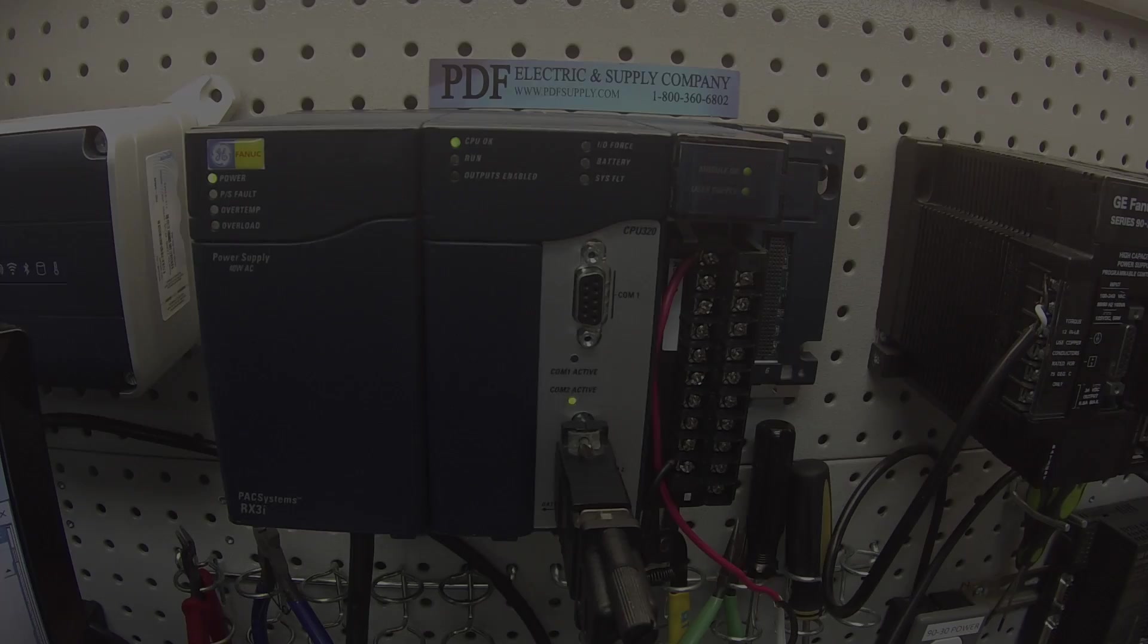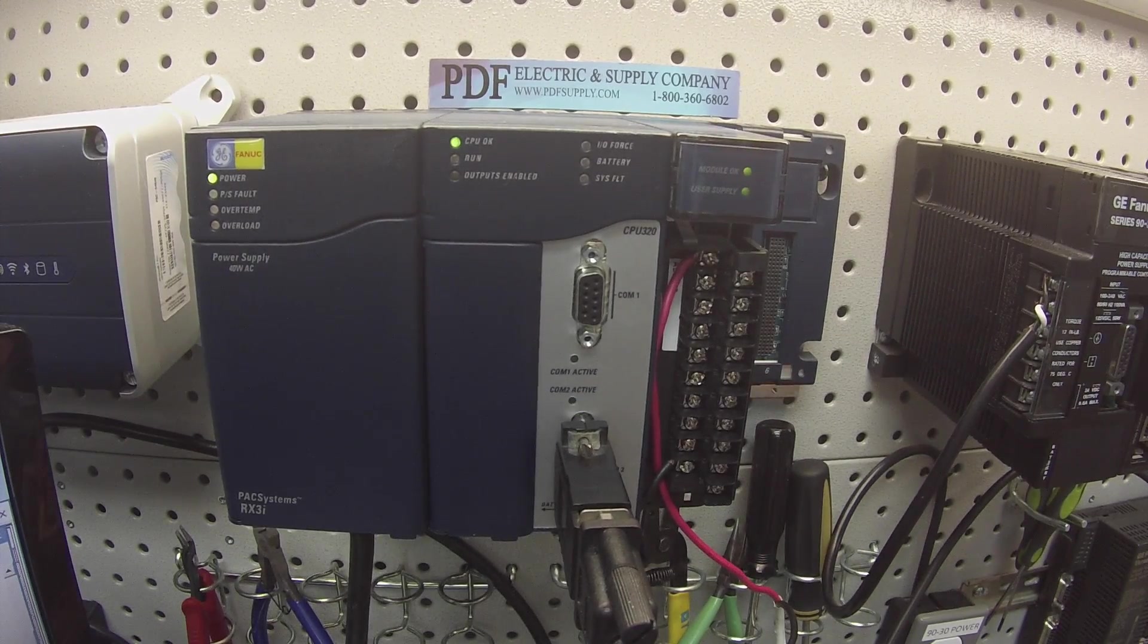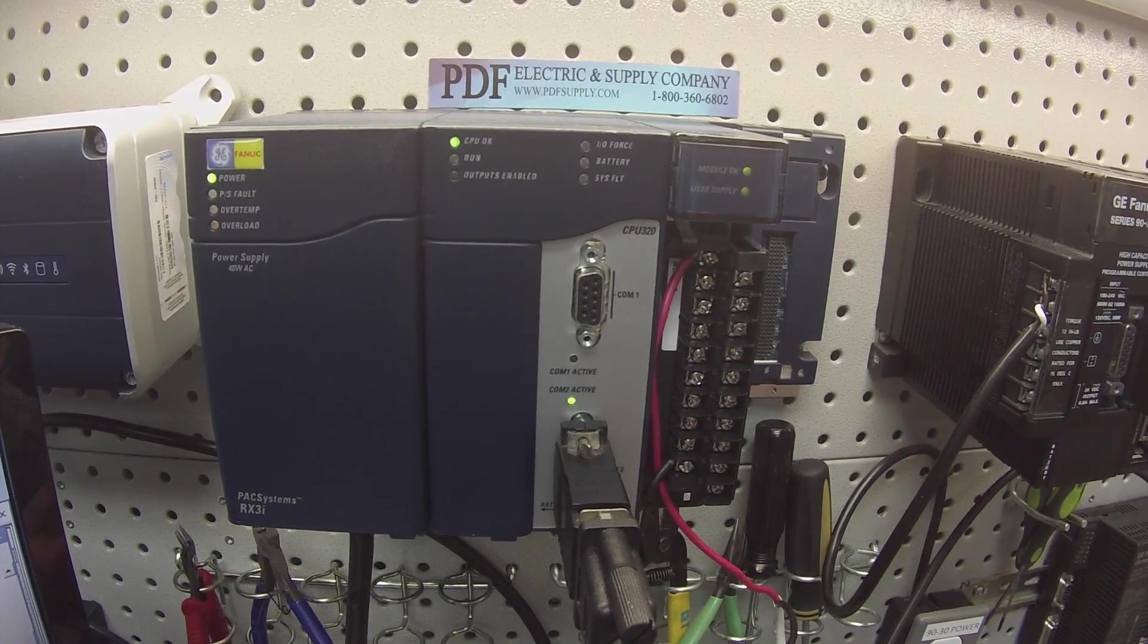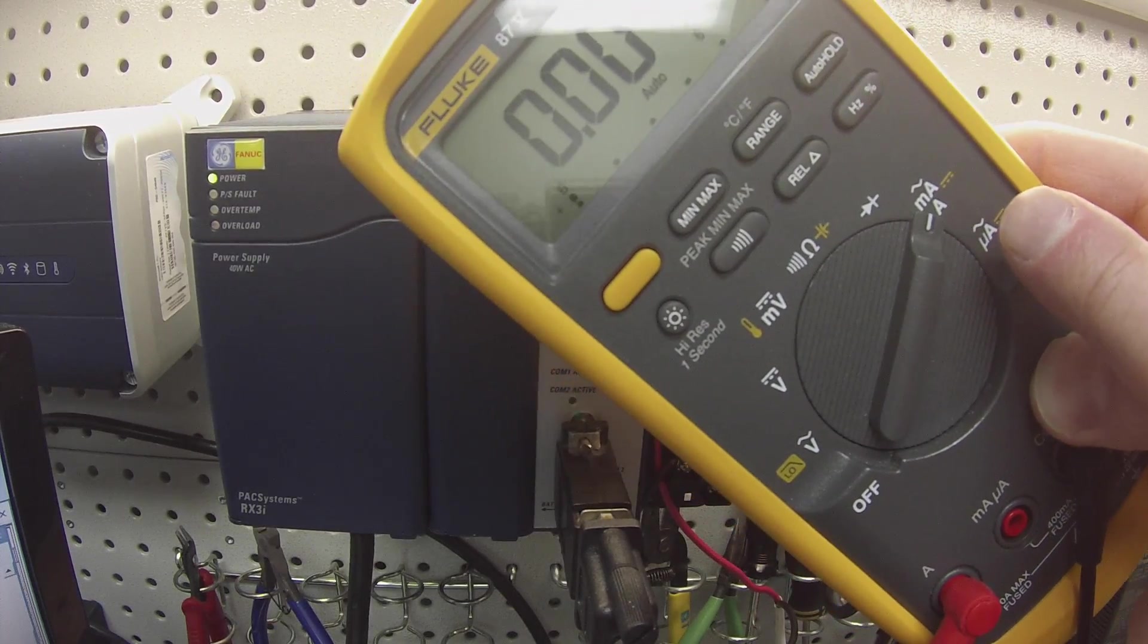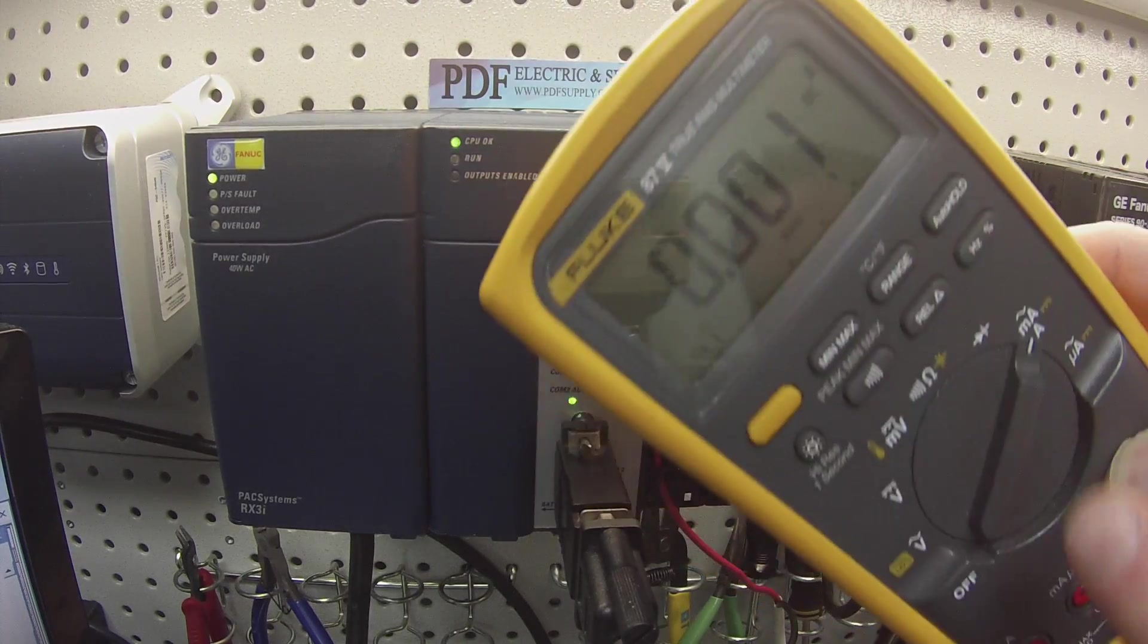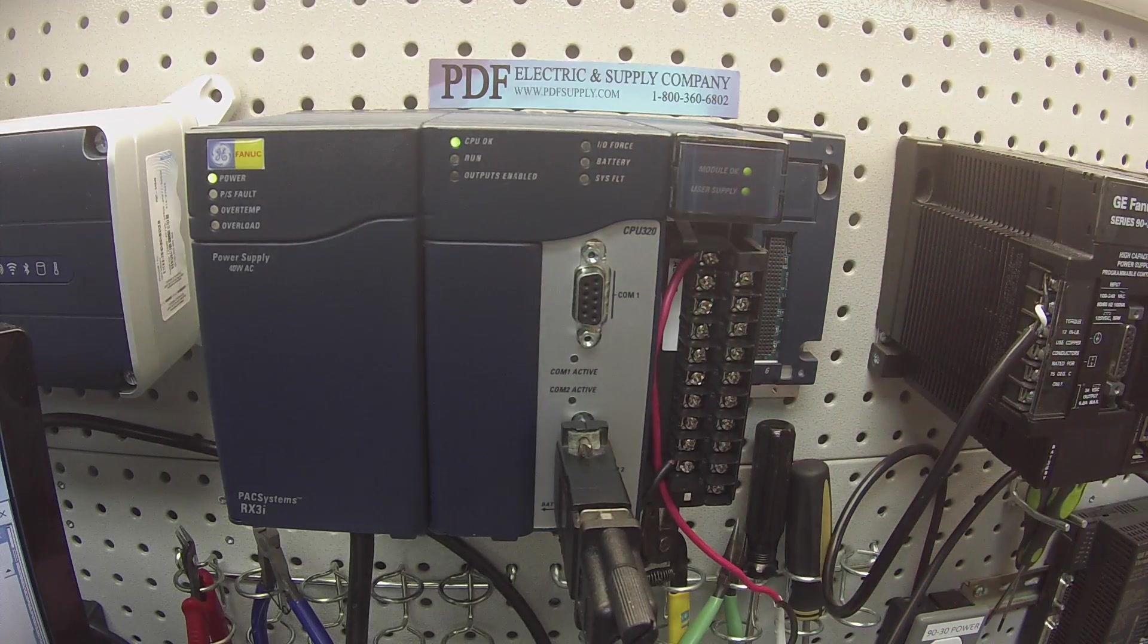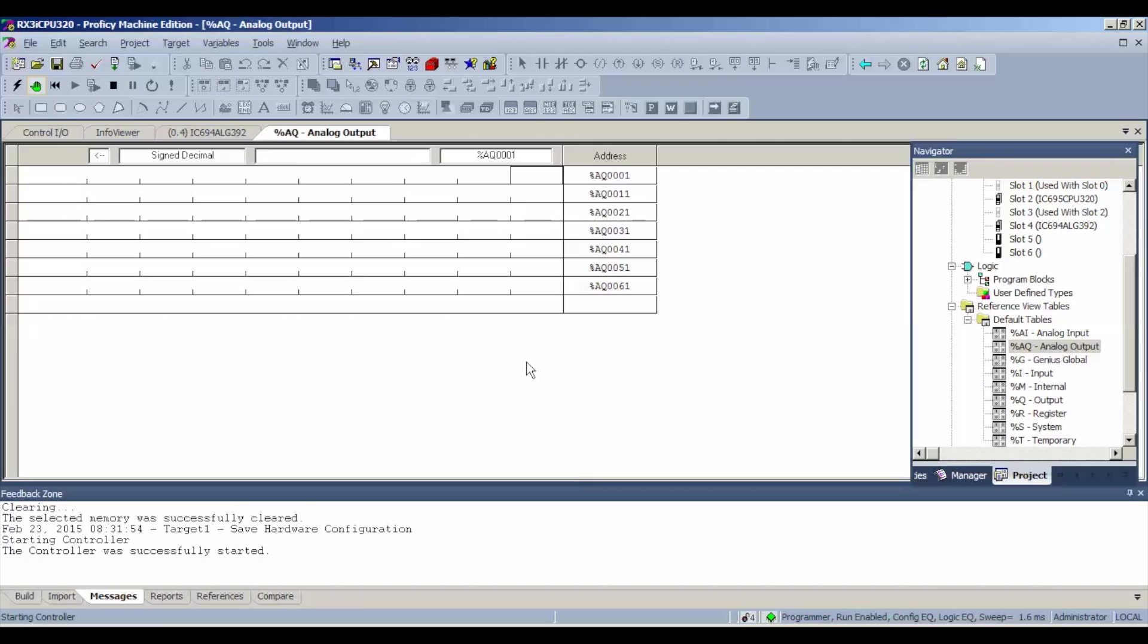I think we're just about done downloading here. When we are done downloading, I'm going to switch my multimeter over to read milliamps in DC, direct current, and I set up my wiring for that ability. I'm going to hit OK. I'm going to go back to our analog output table. Now, we still have values in here, which is fine, so we can test all the channels.